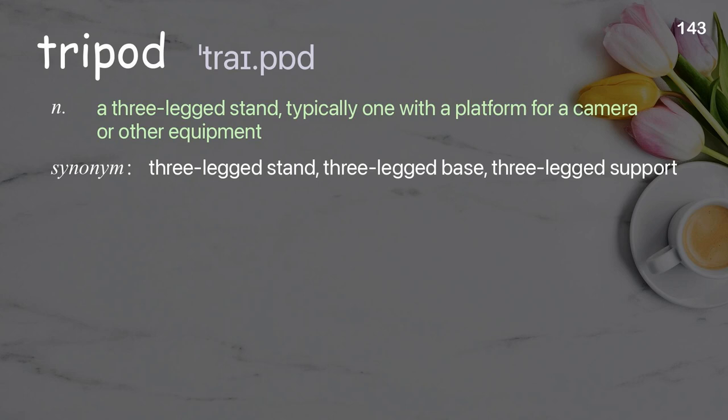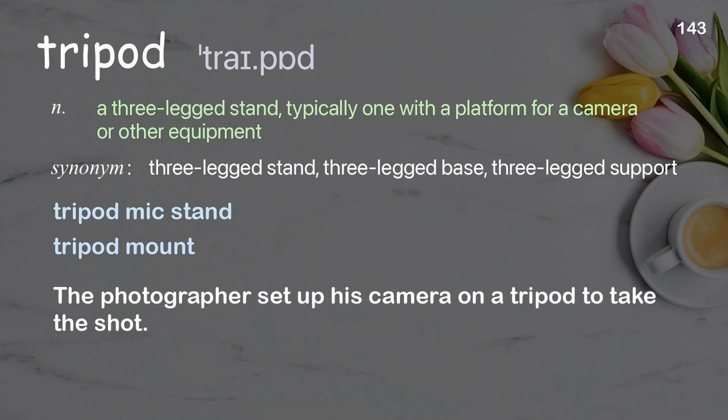Tripod: A three-legged stand, typically one with a platform for a camera or other equipment. Examples: tripod mic stand, tripod mount. The photographer set up his camera on a tripod to take the shot.